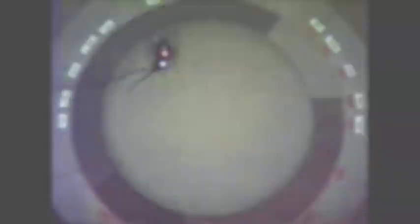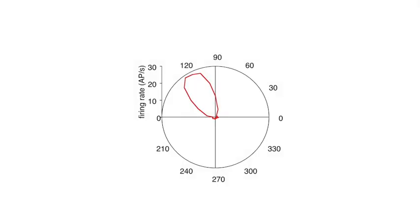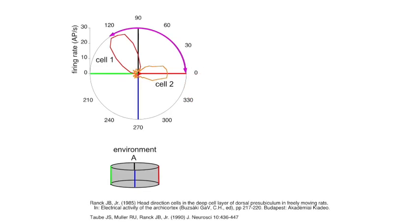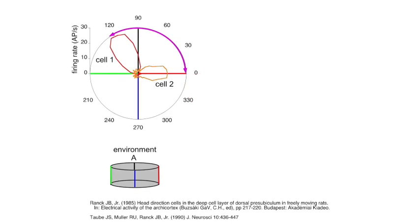They can be quantified by plotting firing rate as a function of head direction. The group of head direction cells signals the internal sense of direction within an environment.